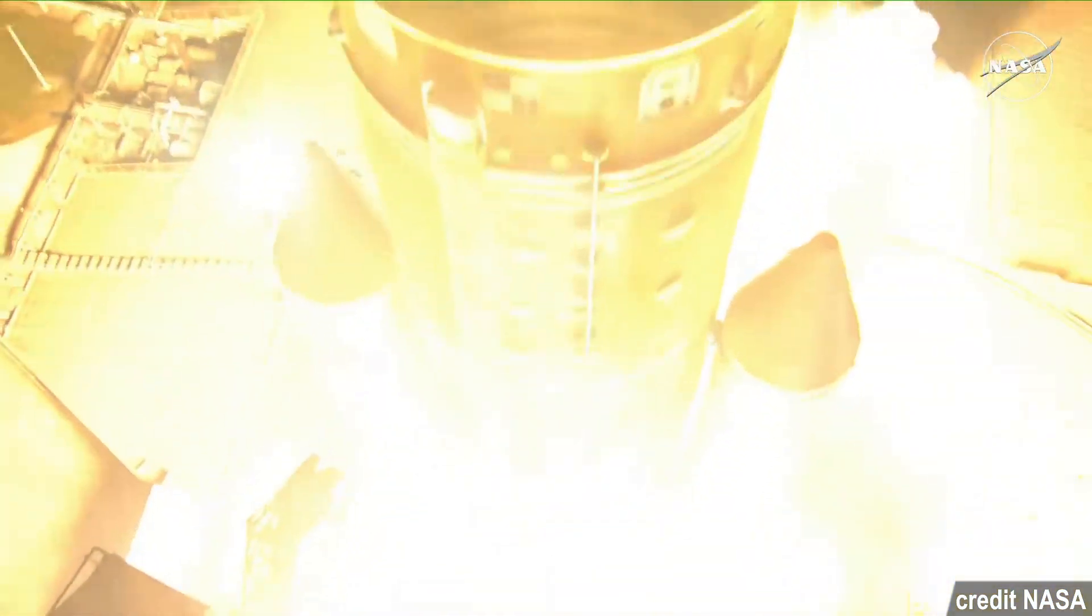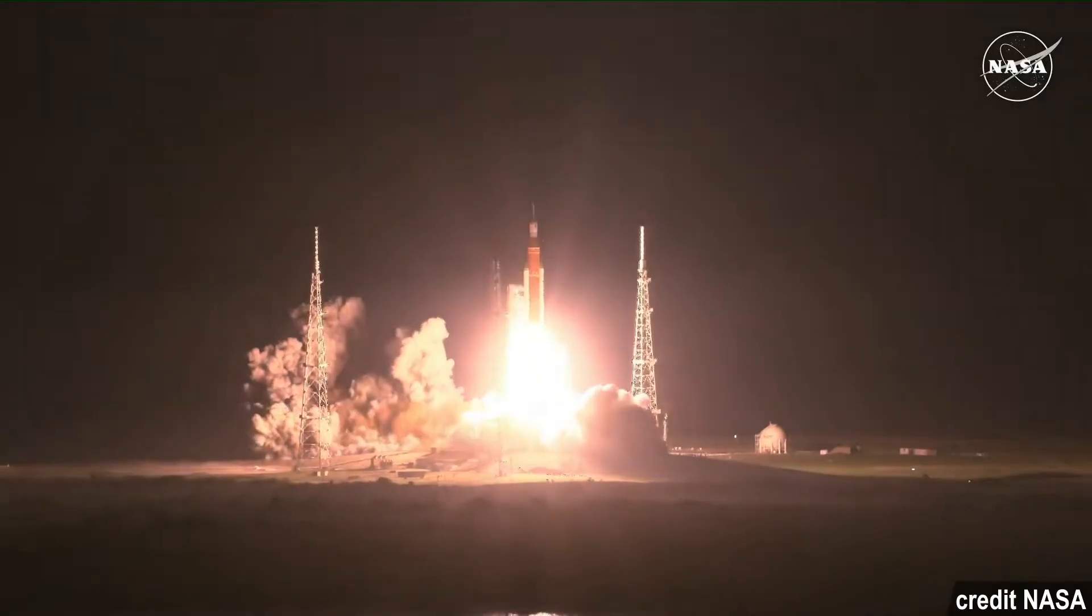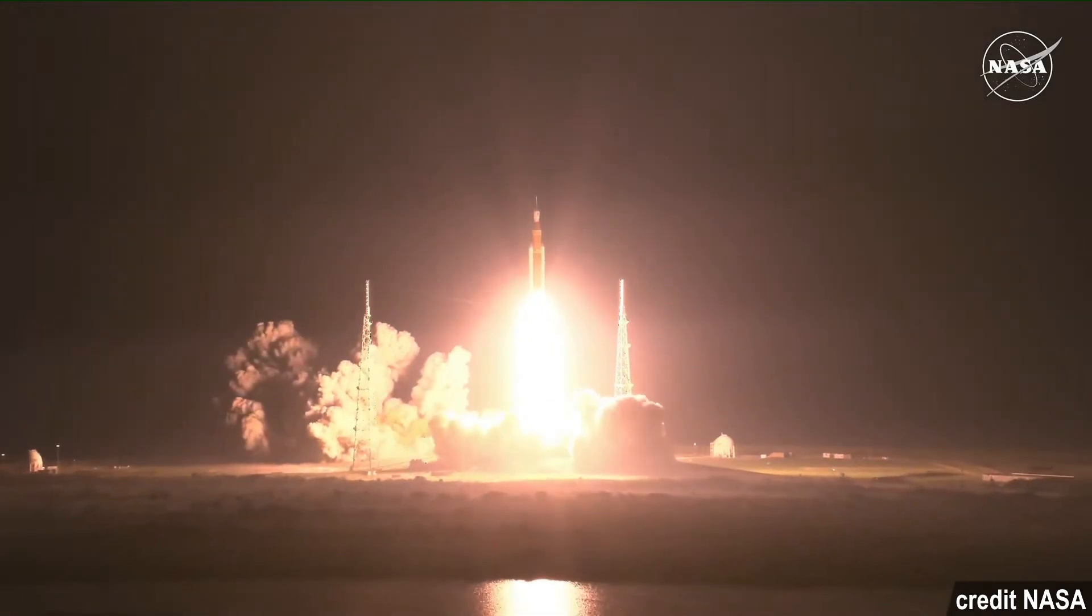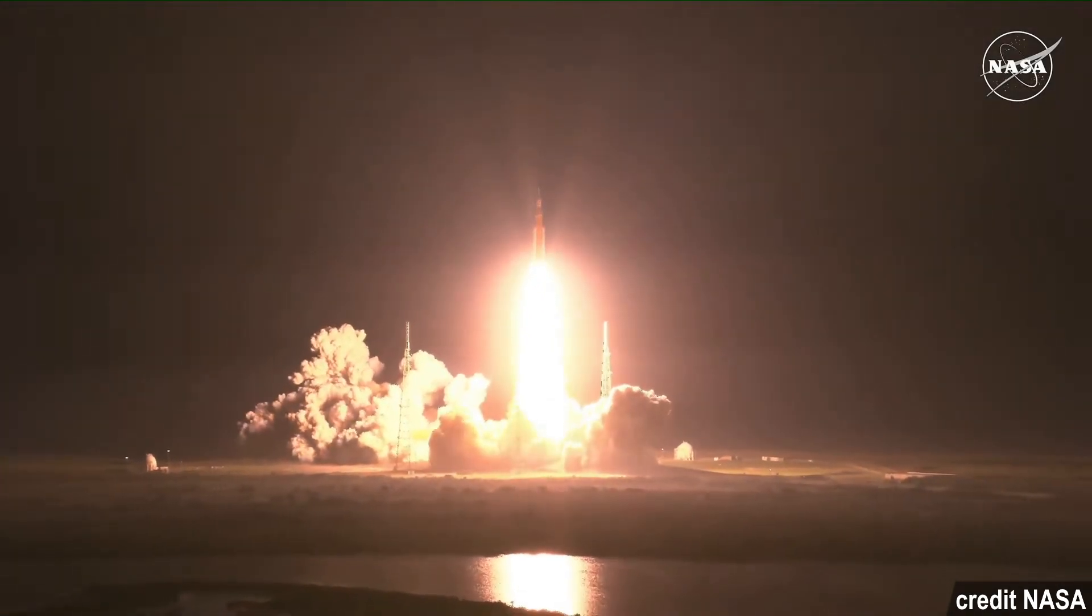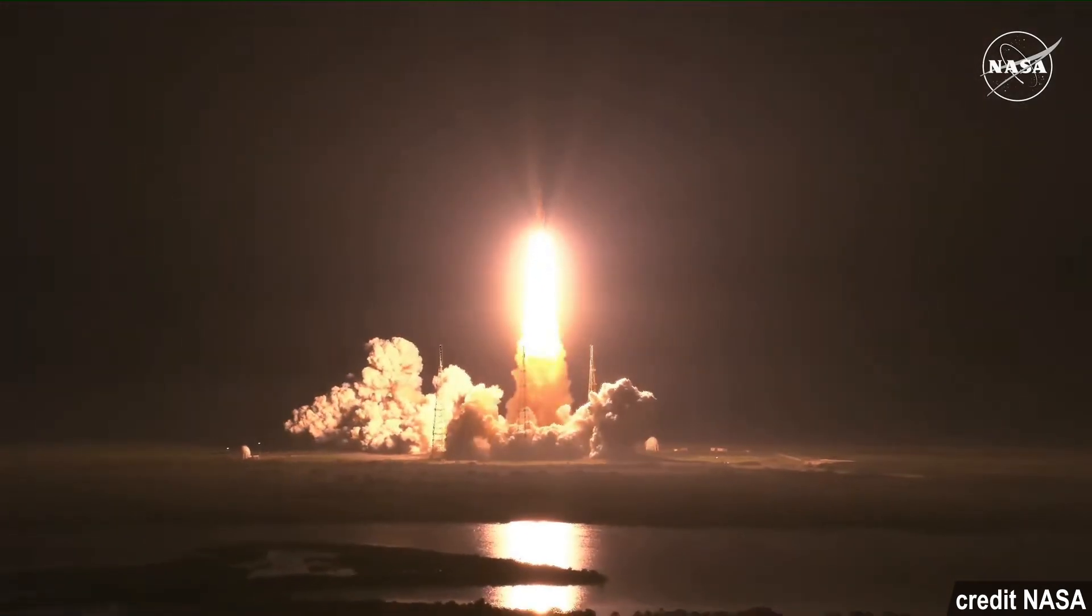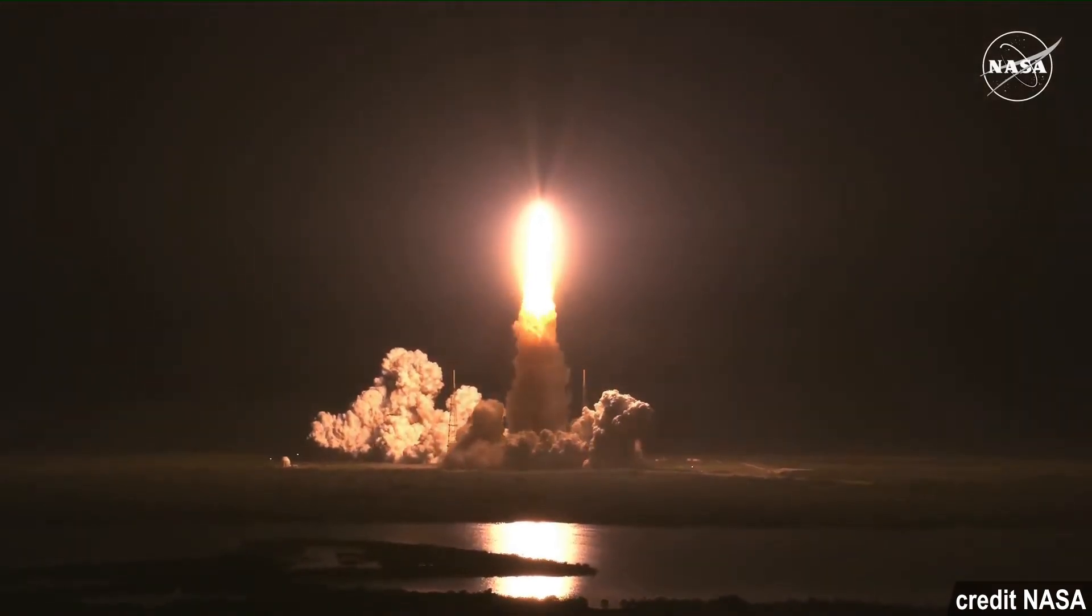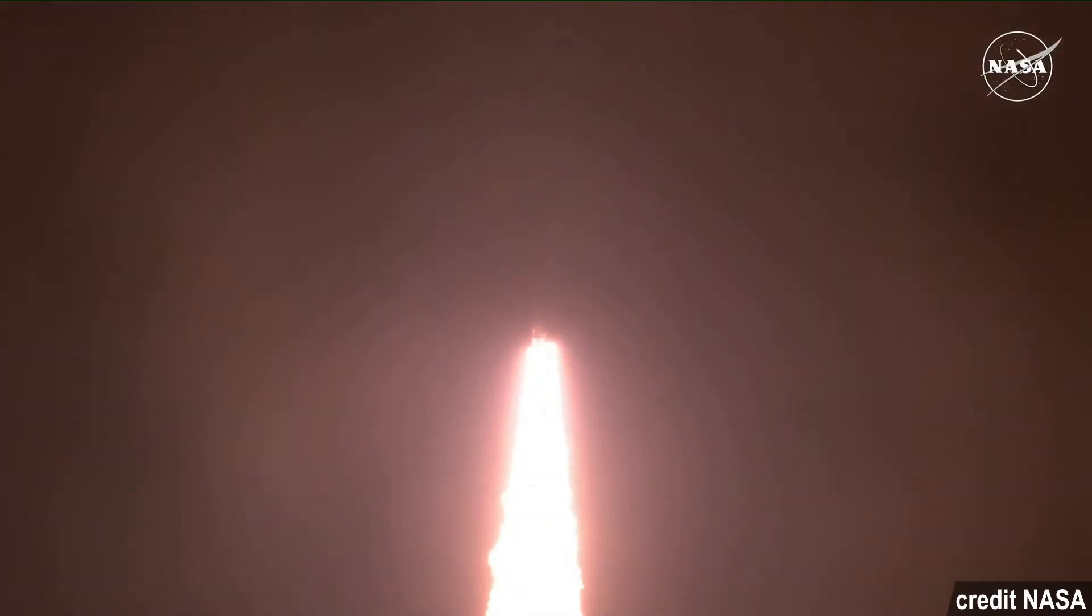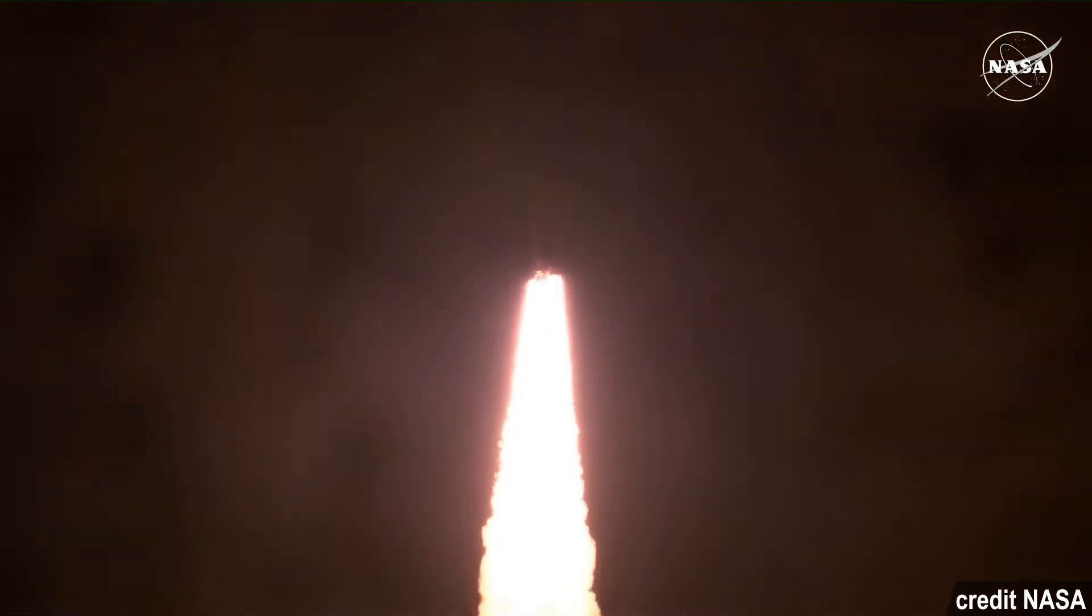When Artemis 1 was launched on November 16th, it took 10 CubeSats with it. JAXA's OMOTENASHI was the only one to actually try to land on the moon, and if it worked, they'd be the fourth country to ever soft land on the moon, all while having the lightest moon lander by a mile, with the Surface Probe weighing just 700 grams.